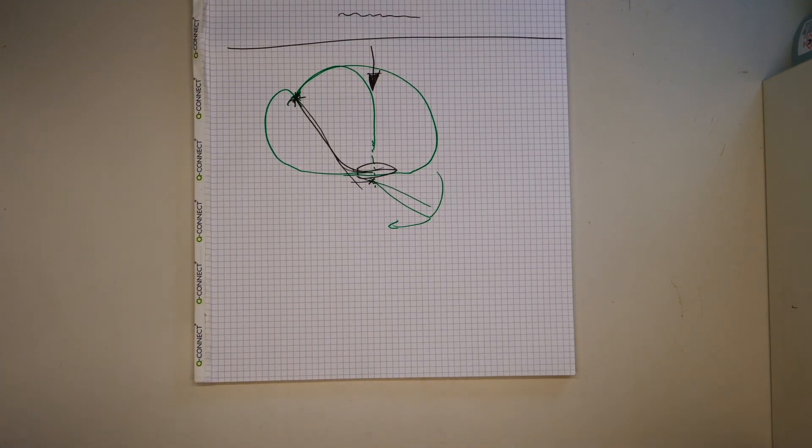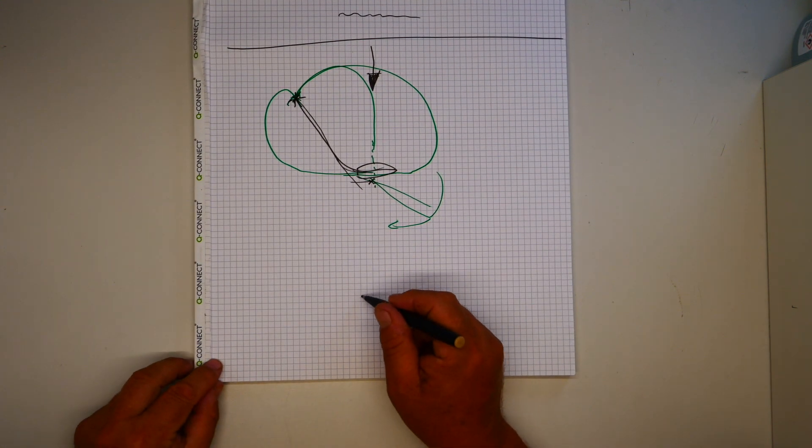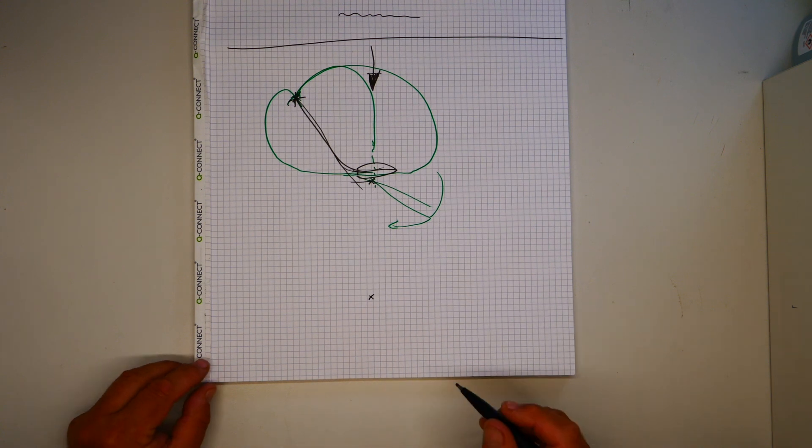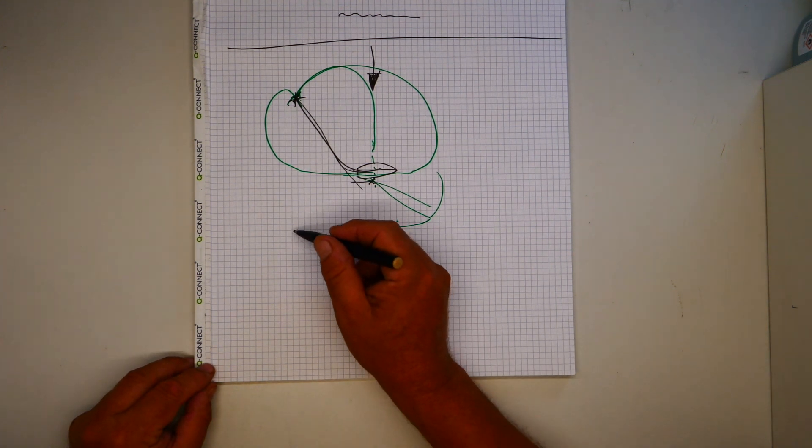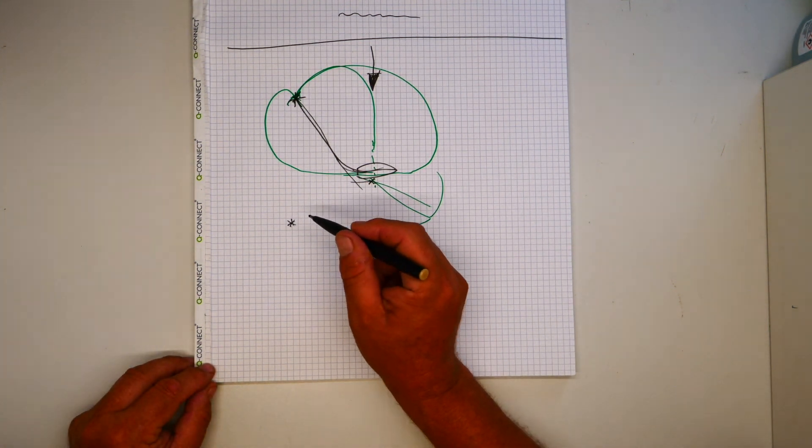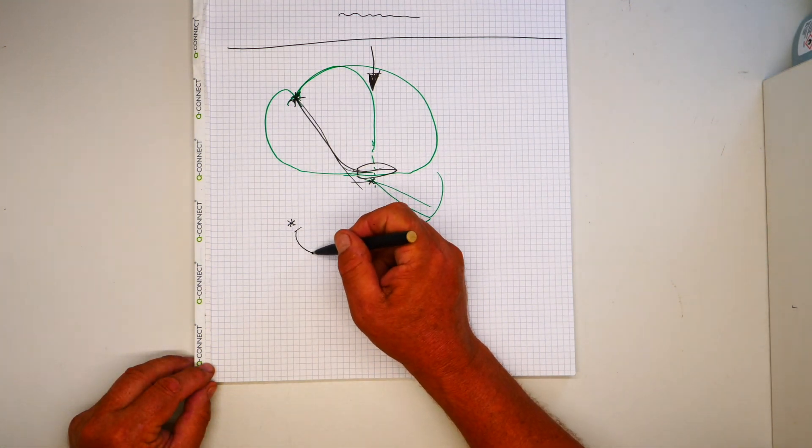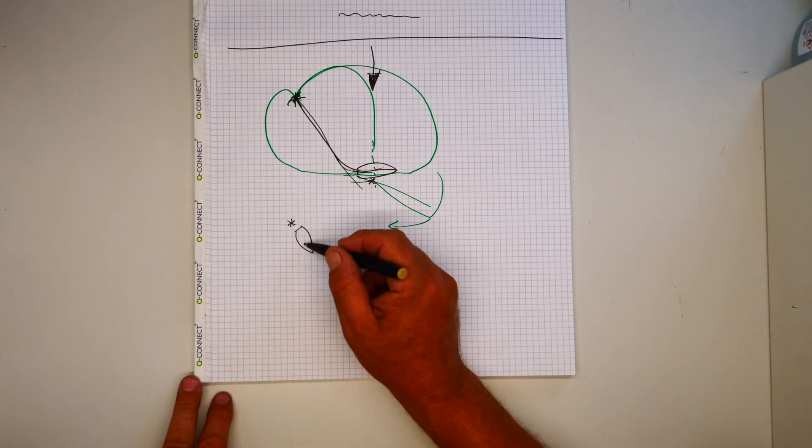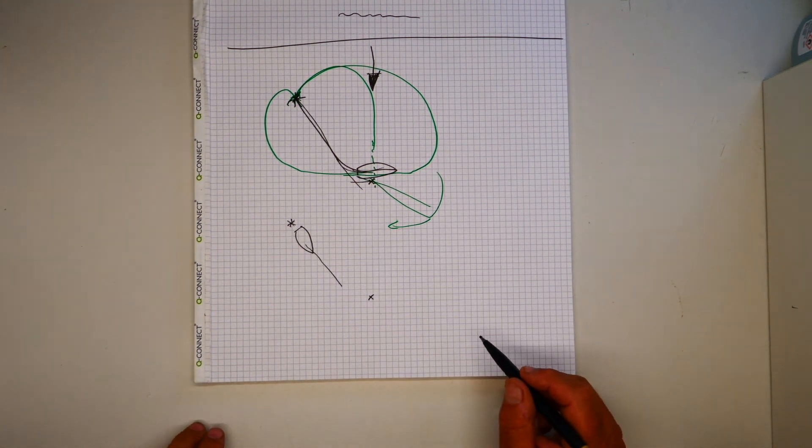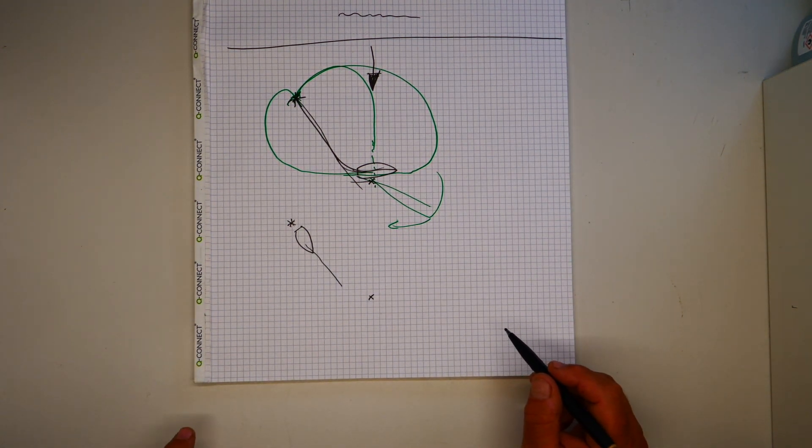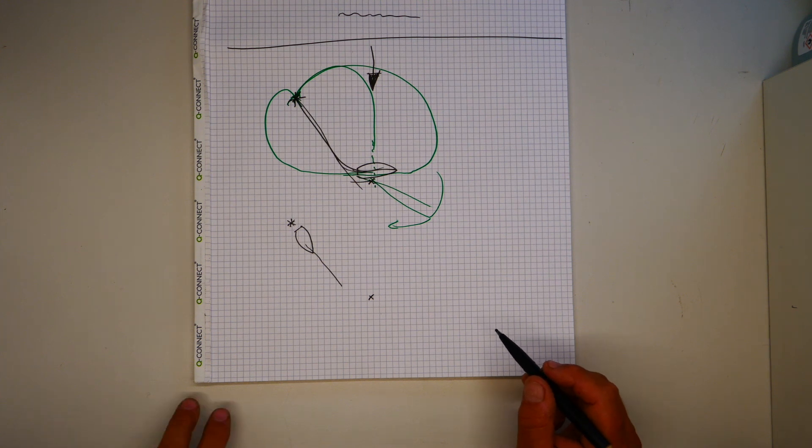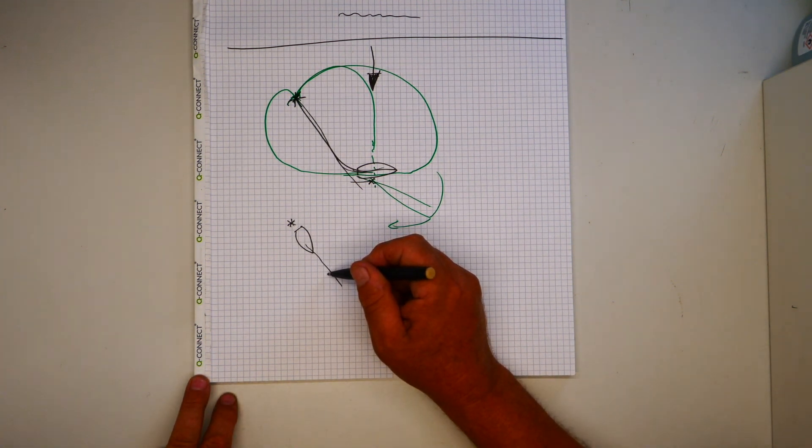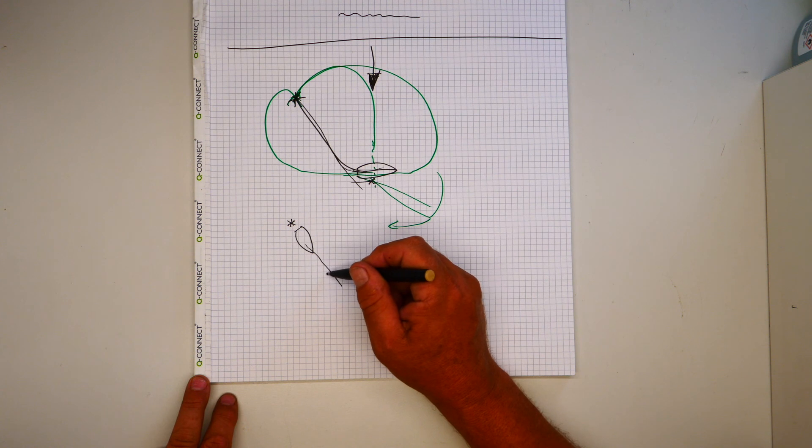Wenn ich das noch zeichne, also wenn es jetzt flautend ist, dann spielt es eigentlich keine Rolle von welcher Seite ich komme. Wenn ich es wieder von hier einzeichne, fahre ich wieder an mit den 45 Grad ein bisschen vorher. Wichtig ist dann einfach, dass ich mehr Drift habe.